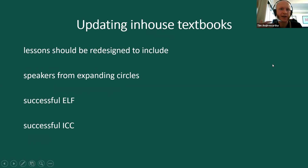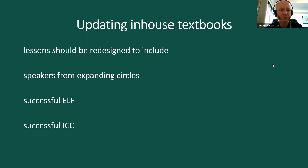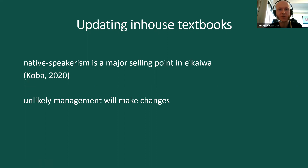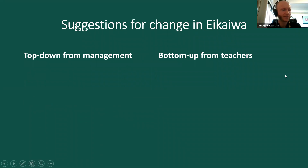So, the in-house textbooks can be redesigned to include speakers from the outer and expanding circles as well as from the inner circle, and should show successful ELF and successful intercultural communication. However, as mentioned, native speakerism is a major selling point in eikaiwa, so it seems unlikely that management — particularly in the bigger eikaiwa chains — will make these changes.